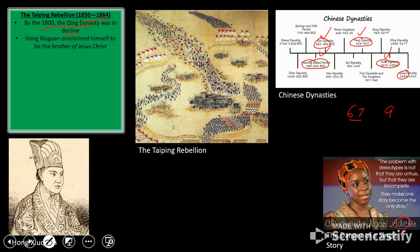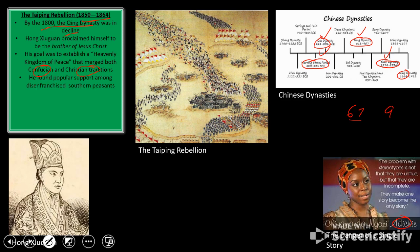Hong Xiuquan, by 1850 in southern China, proclaimed himself to be the brother of Jesus Christ. He had come into contact with Christian missionaries, and his goal was to establish a heavenly kingdom of peace that merged both Confucian and Christian traditions, challenging the status of the Qing Dynasty. Hong Xiuquan found major support among disenfranchised southern peasants, and for 14 years waged this war in southern China. They captured Nanjing and nearly toppled the Qing Dynasty.